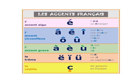Next is l'accent grave. We pronounce it as — E is pronounced as 'A'. It changes the letters A, E, U into a different sound.